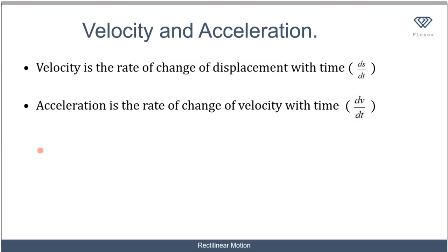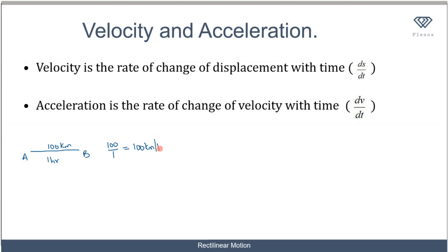For example, let's say you want to travel from point A to point B — say from Lagos to Ibadan — which is a distance of 100 kilometers. If you intend to travel that distance in one hour, your average speed or velocity would be distance over time: 100 over 1, which gives 100 kilometers per hour.